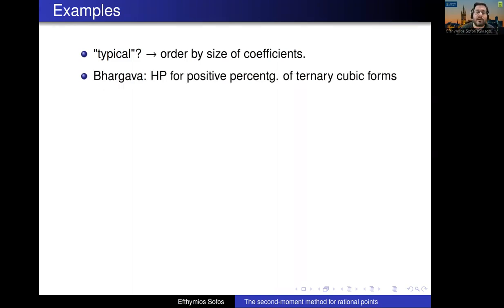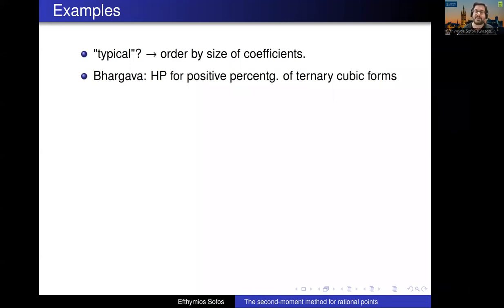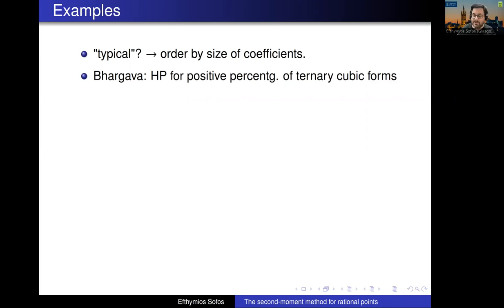One example: in 2014–2015, Bhargava proved that if you take a cubic equation in three variables — homogeneous, with 10 coefficients — and let these 10 coefficients vary in a big interval, say from minus a billion to plus a billion, and let the length of the interval go to infinity, then a positive percentage of these equations will satisfy the Hasse principle. Interestingly, he also proved that a positive percentage will also fail the Hasse principle. The technology he used was built on a lot of his previous work on averages of Selmer ranks.